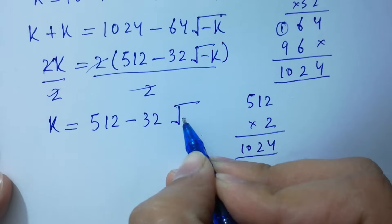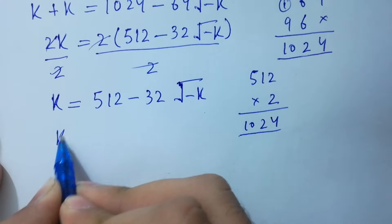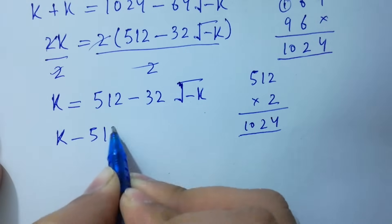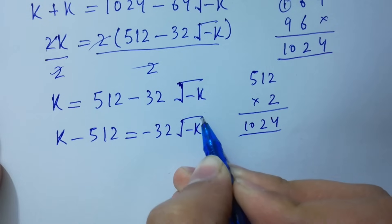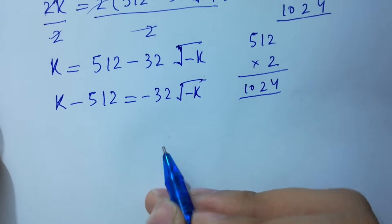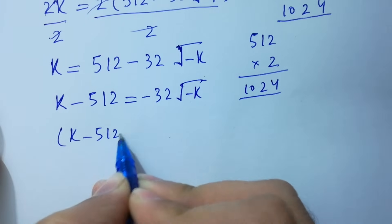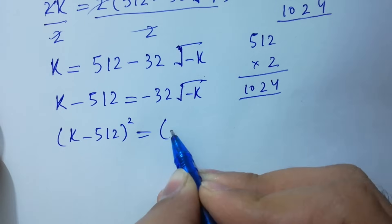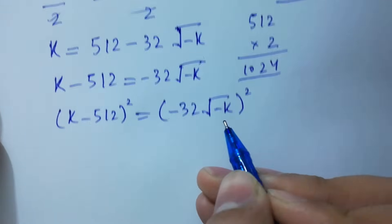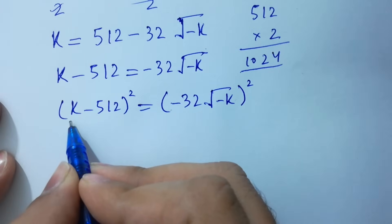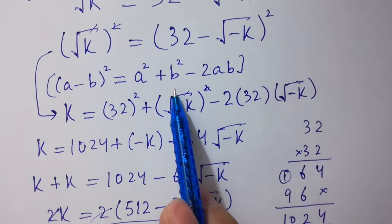k minus 512 equals minus 32 times square root of minus k. Take square on both sides: k minus 512 whole squared equals minus 32 times square root of minus k, all squared. Apply the a minus b whole square formula: a squared plus b squared minus 2ab.